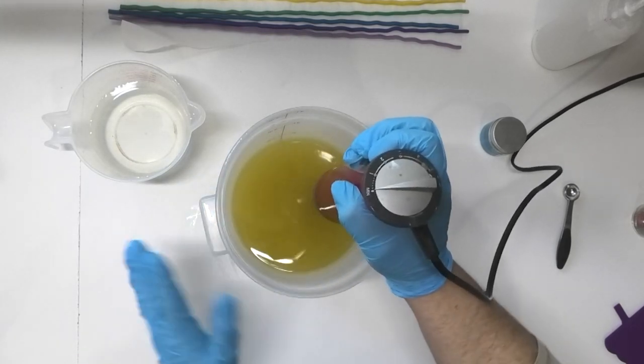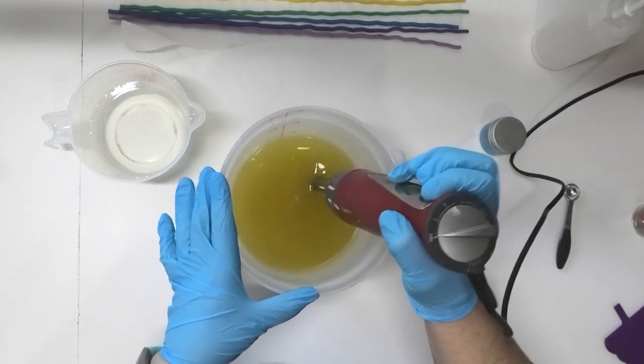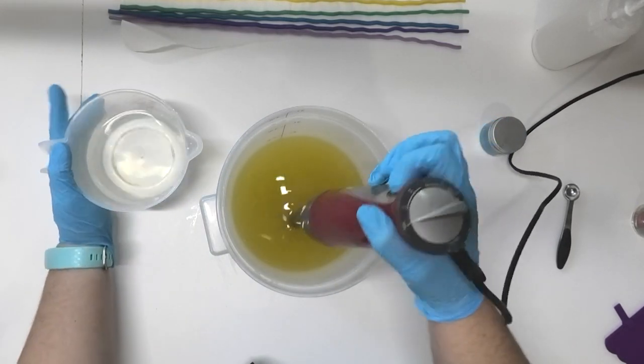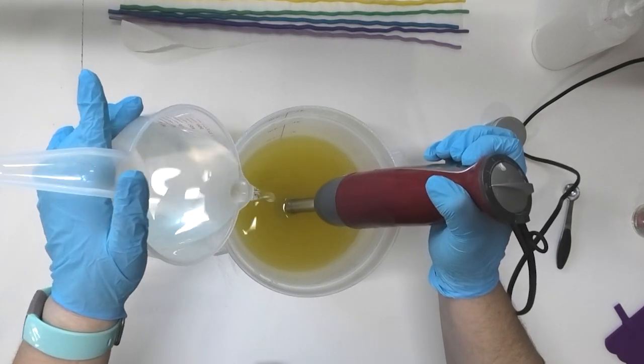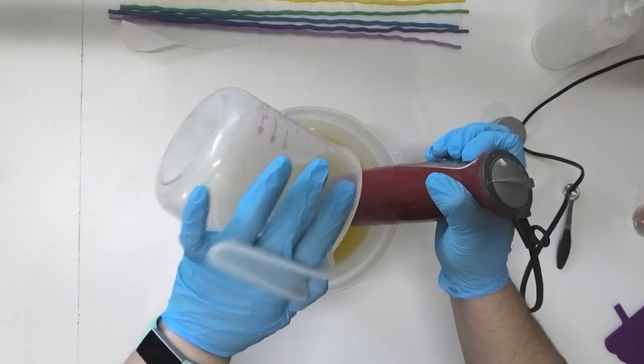Alright so let's get into making this. I'm going to be doing this in a couple of layers. So I have split my oils up so I can do a top and the bottom layer. So I've got enough in here for my bottom. Let's pour our lye water in. We're going to mix it up and then I'll add in a little bit of color.